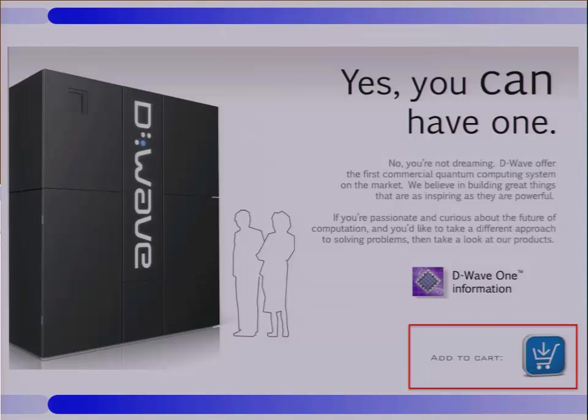One has to be a little bit careful when you press this add to cart button. You might have to check your credit card because, as far as Google and Lockheed Martin are concerned, they were the first ones to purchase this machine called the D-Wave 1. It costs $10 million, slightly more than $9,000 for a mouse line.